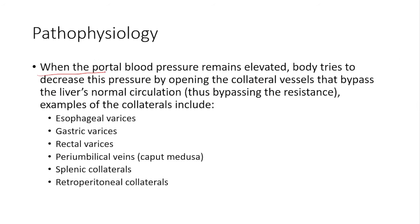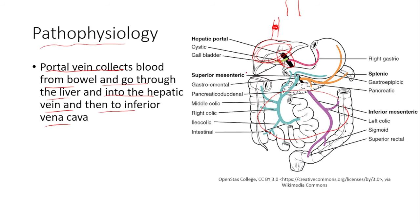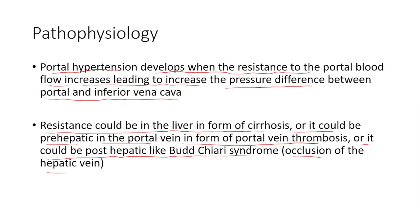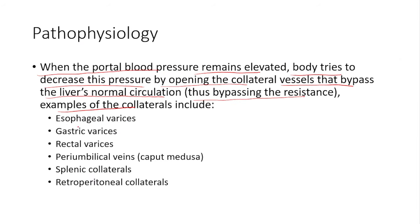When portal blood pressure remains elevated, the body tries to decrease this pressure by opening collateral vessels that bypass the liver's normal circulation, thus bypassing the resistance. Examples of these collaterals are esophageal varices, gastric varices through the esophagus and stomach, anorectal varices through the rectum, paraumbilical veins also called caput medusae, splenic collaterals, and retroperitoneal collaterals.